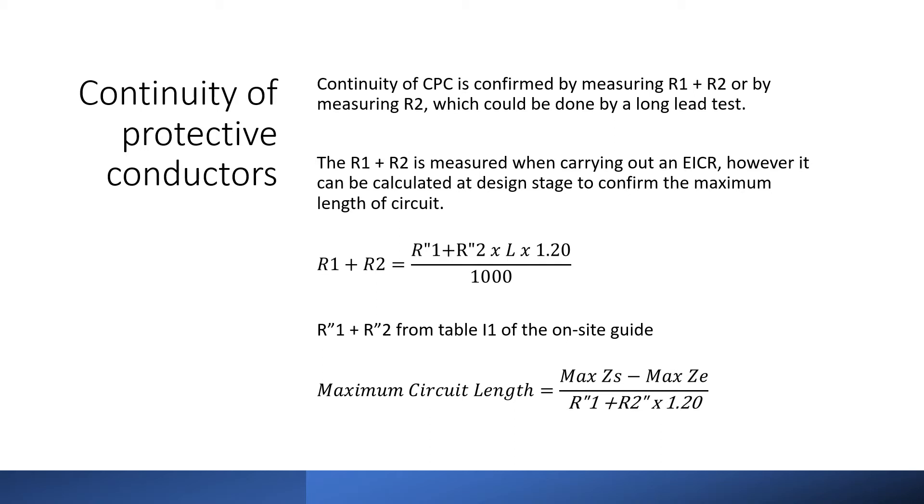The reason for this is that when the installation is energized the protective bonding conductors will be connected and parallel paths may exist which can affect the accuracy of the measured Zs. Another reason is that when measuring Zs using a no trip setting to prevent tripping an RCD the loop impedance tester uses a lower test current than is used on the highest setting that we use when measuring the Ze and this can also affect the accuracy of the test.